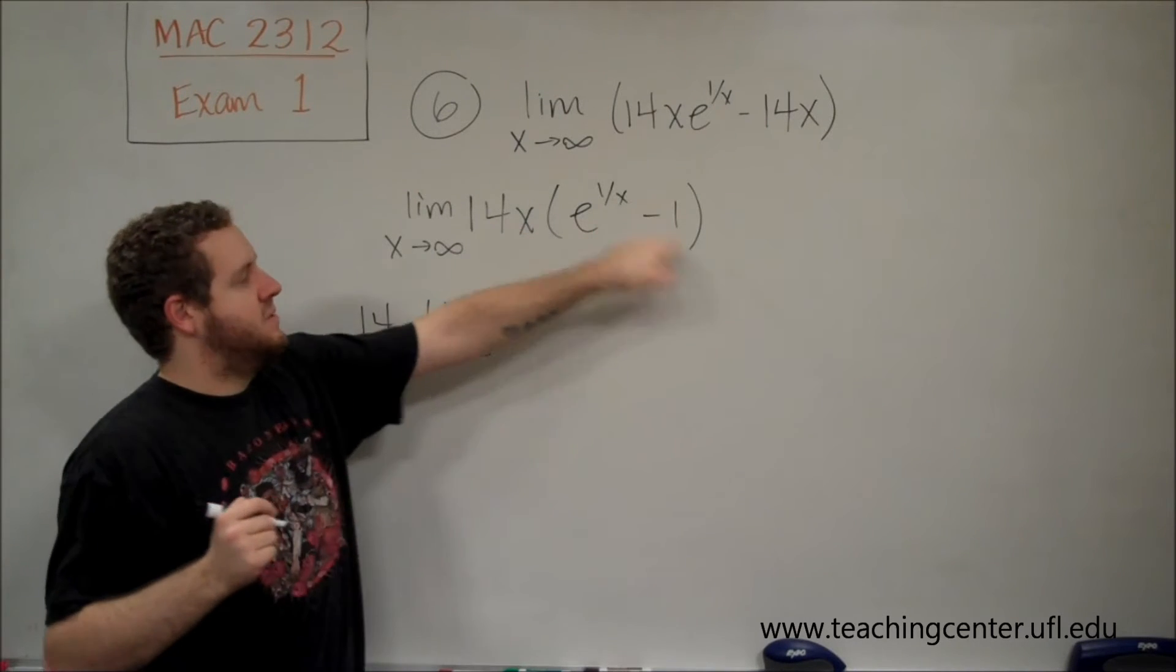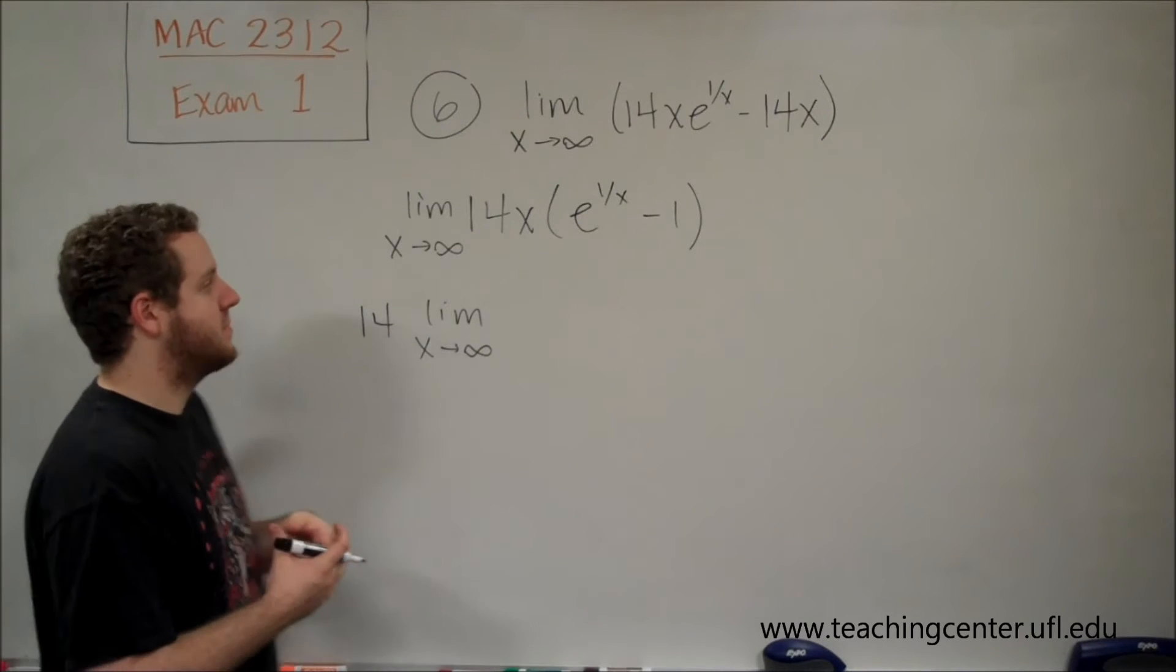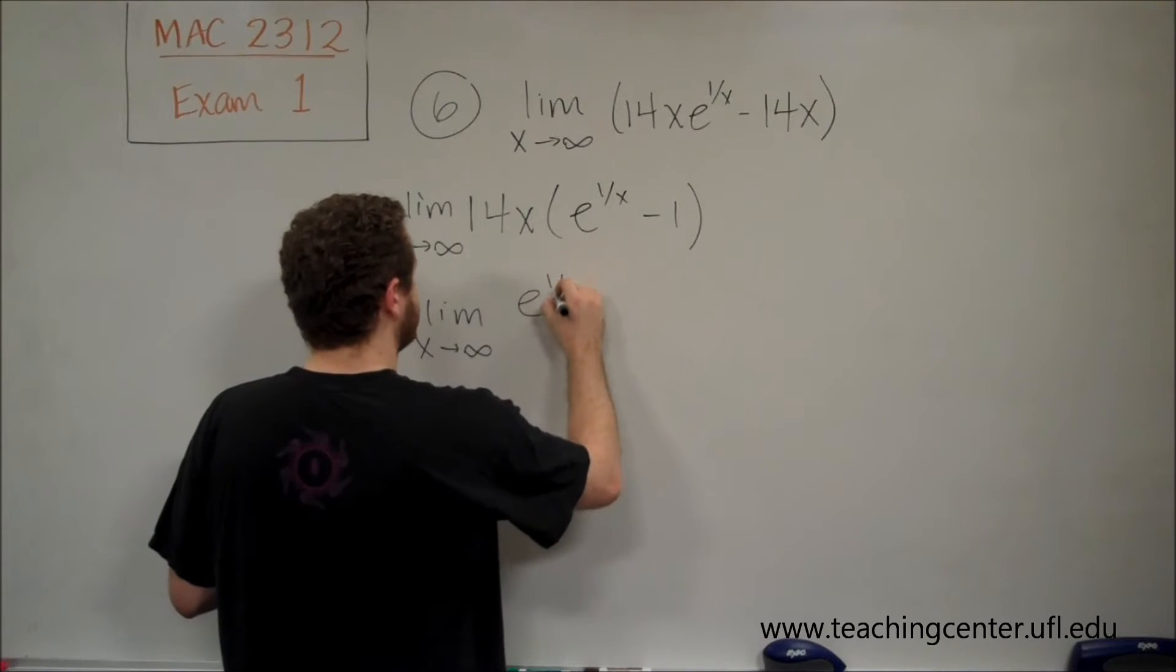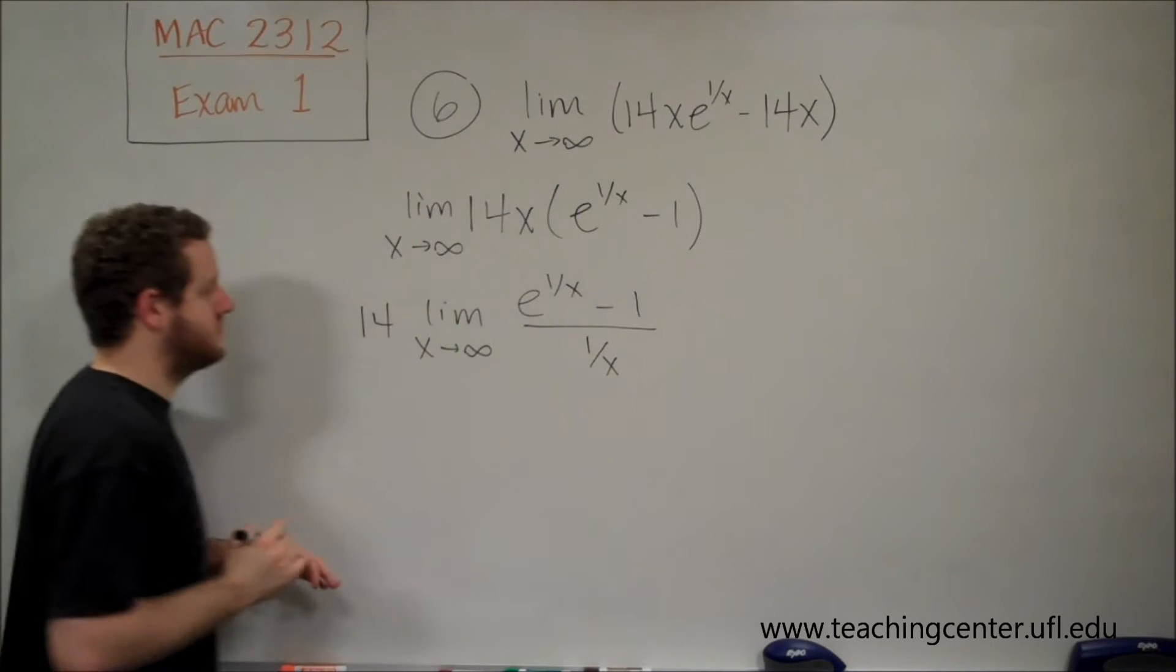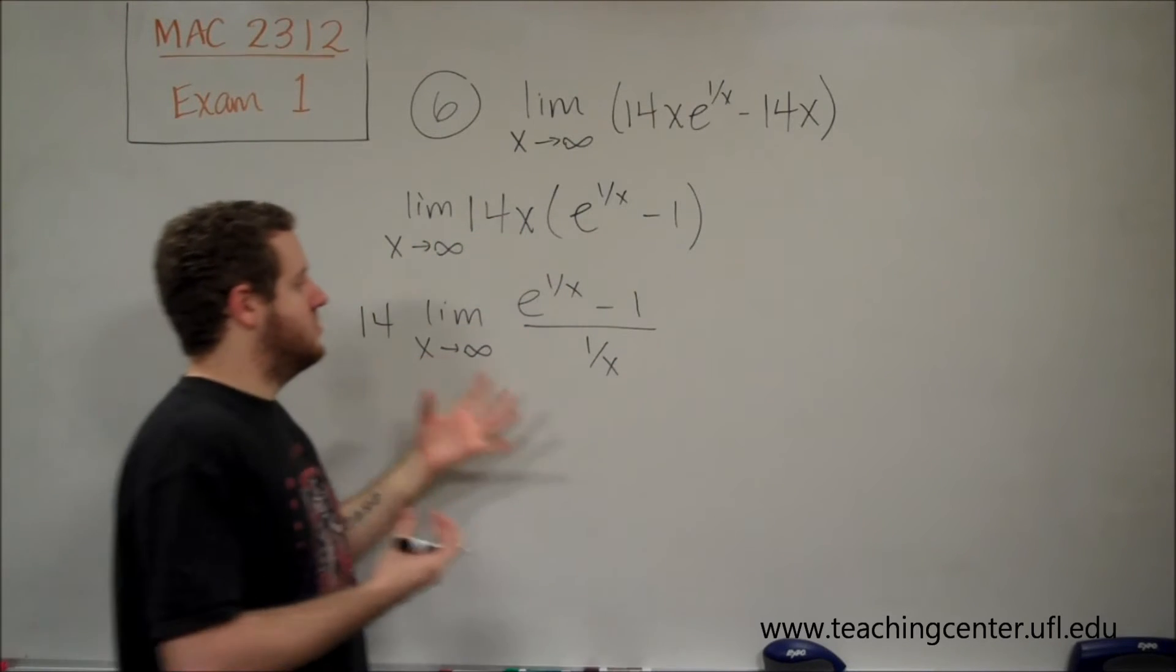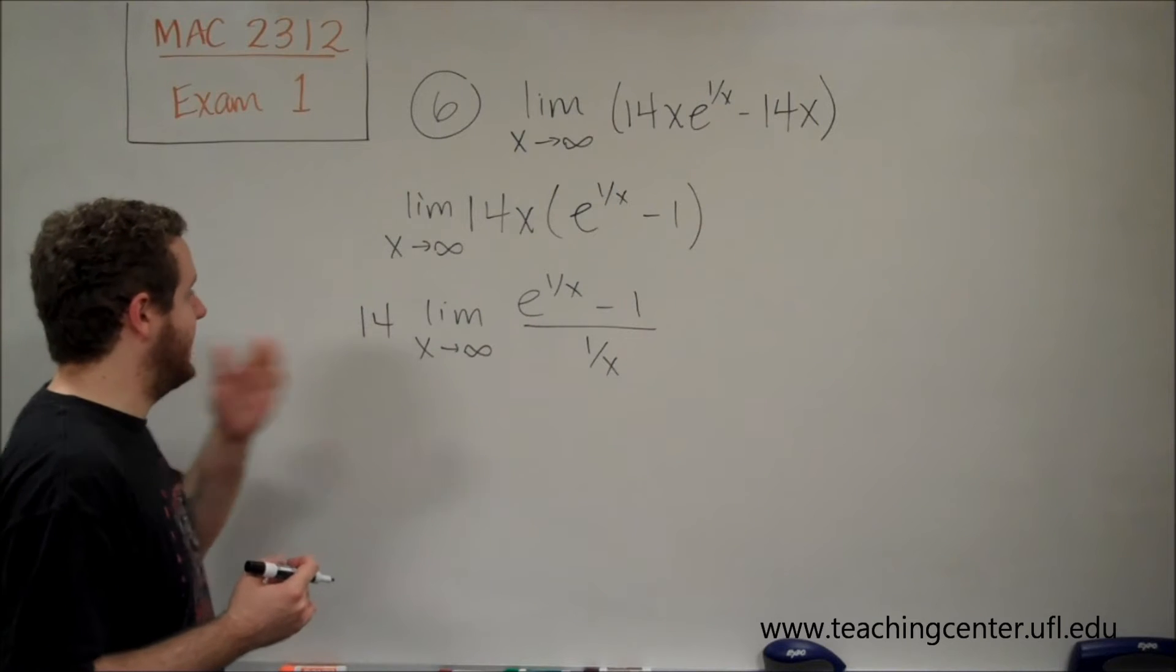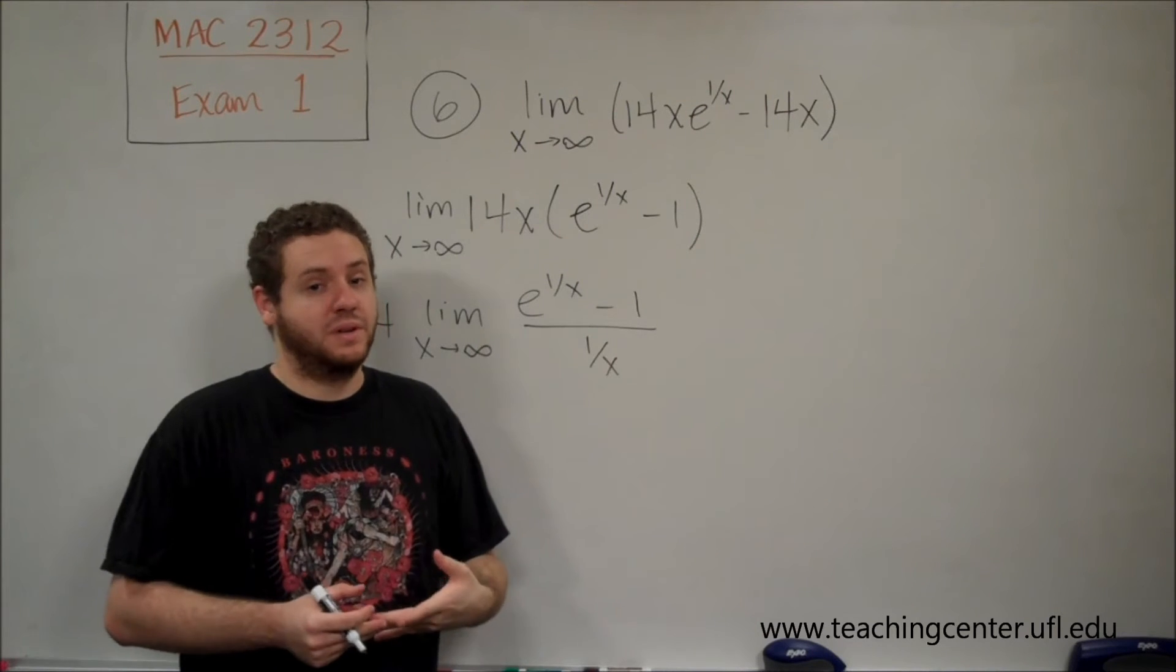We have x times (e^(1/x) - 1). We can't evaluate that. We need to make it a fraction so we can use L'Hôpital's rule. The easiest way is if we have x in the numerator, that's the same thing as putting 1/x in the denominator. In normal mathematics you probably wouldn't want to do that, but because we have to make it a fraction, we do want to in this case. Since our exponent has 1/x, this will work out nicely.